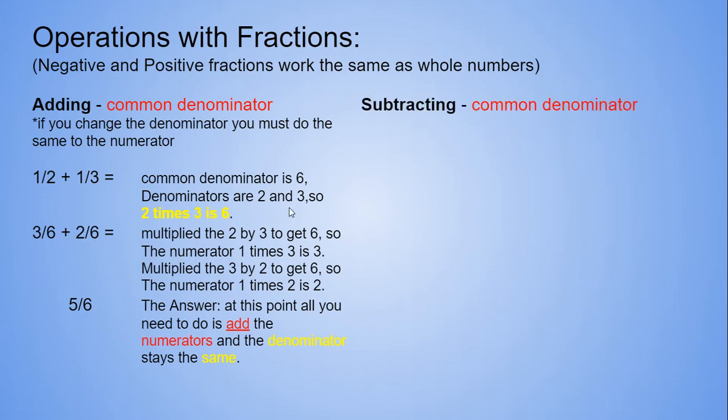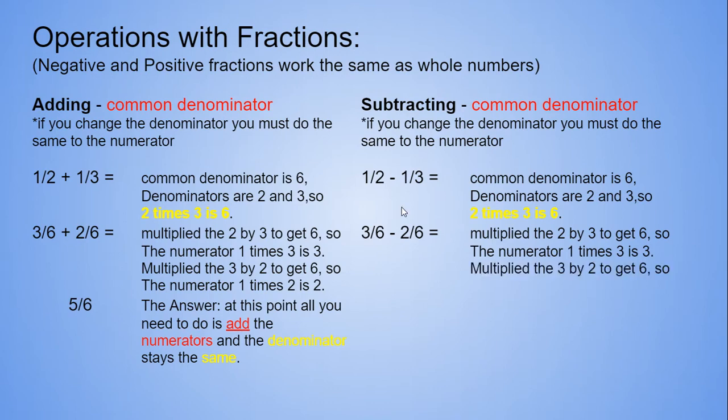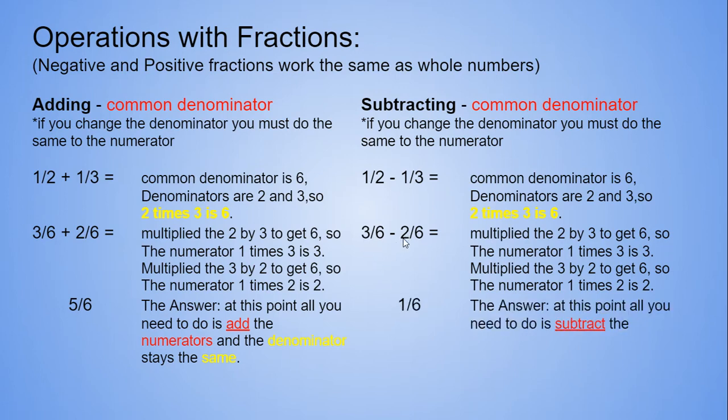For subtracting, again, we need a common denominator. I used the same example. So our common denominator would be 6 by multiplying 2 times 3. We change the denominator, so we must change the numerator. We do it in the same fashion. Multiplying 1 times 3 gives us 3, 1 times 2 gives us 2. And now we just subtract in this scenario. 3 minus 2 is 1, and then the common denominator stays the same.